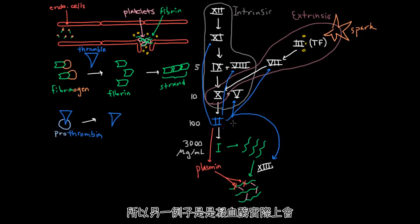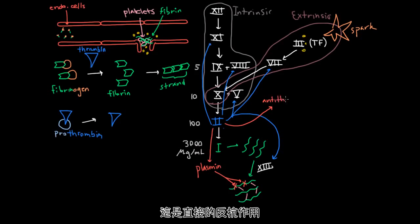And so another example is that thrombin actually stimulates the production of antithrombin, which is kind of counterintuitive, but that's sort of classic negative feedback. And what antithrombin is going to do, as you could guess, is it's going to decrease the amount of thrombin that's being produced from prothrombin, and it's also going to impede the production of activated 10 from 10.